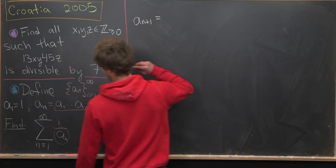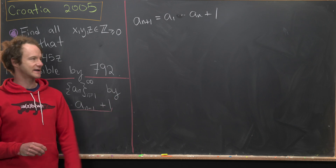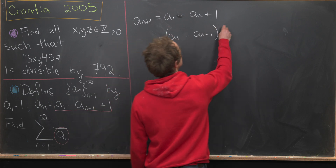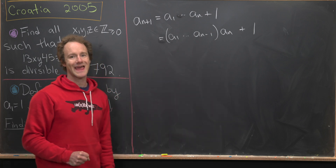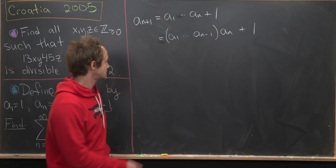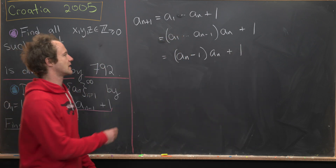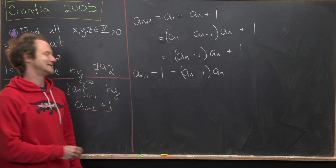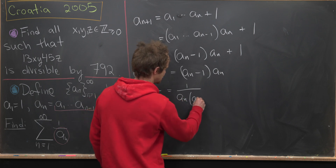Let's write aₙ₊₁ = a₁ · a₂ · … · aₙ · (aₙ + 1). Associating the first terms, this equals (a₁ · … · aₙ₋₁) · aₙ + 1. Solving for the product a₁ · … · aₙ₋₁ from the defining equation (subtracting 1 from both sides), we get aₙ₊₁ − 1 = (aₙ − 1) · aₙ. Taking reciprocals: 1/(aₙ₊₁ − 1) = 1/(aₙ · (aₙ − 1)).